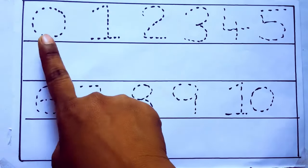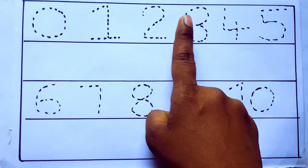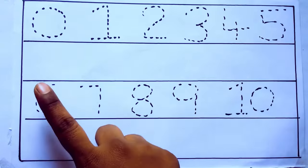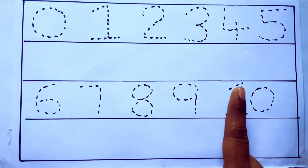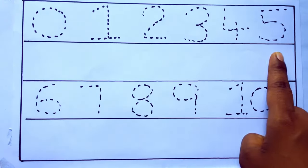0 to 10: 0, 1, 2, 3, 4, 5, 6, 7, 8, 9, 10 and rewriting the numbers.